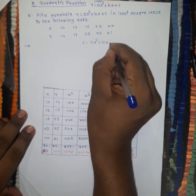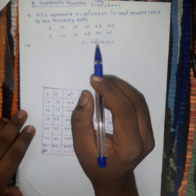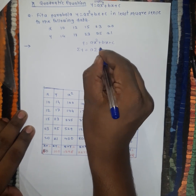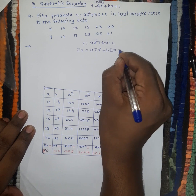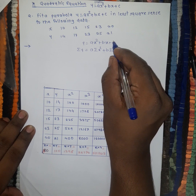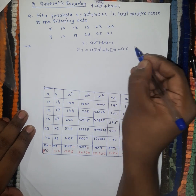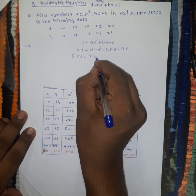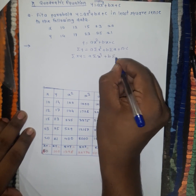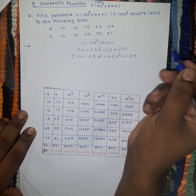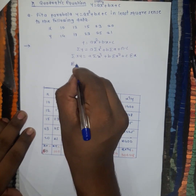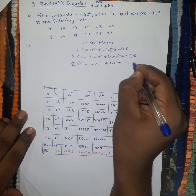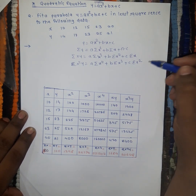We have to fit a parabola y equal to ax squared plus bx plus c. The first step is to apply a summation to this equation, so it becomes: summation y equals a times summation x squared, plus b times summation x, plus n times c. Next, multiply the equation by x: summation xy equals a times summation x cubed, plus b times summation x squared, plus c times summation x. This gives us the set of equations required to solve the example.